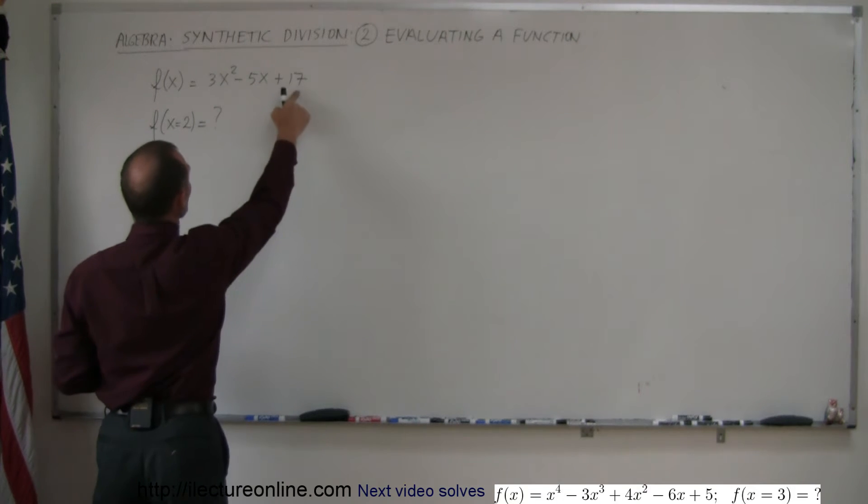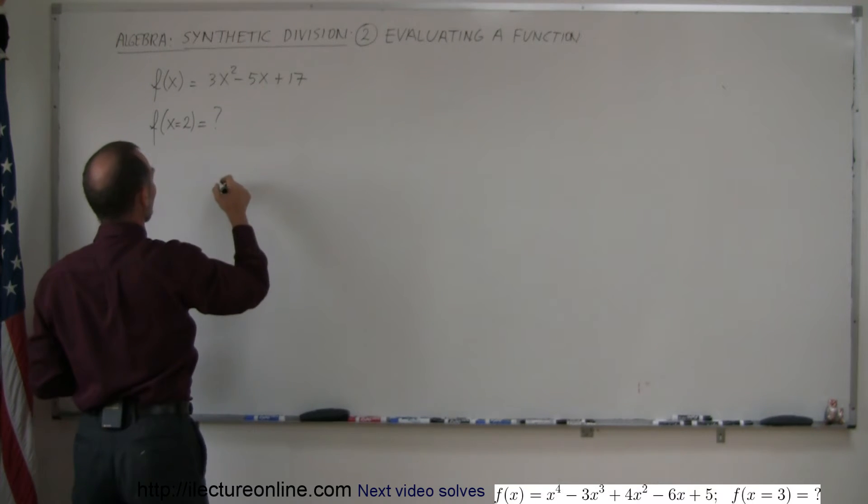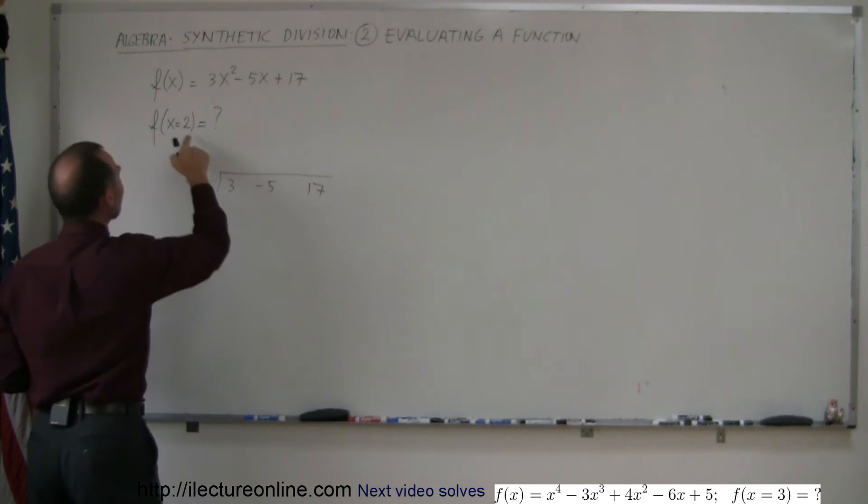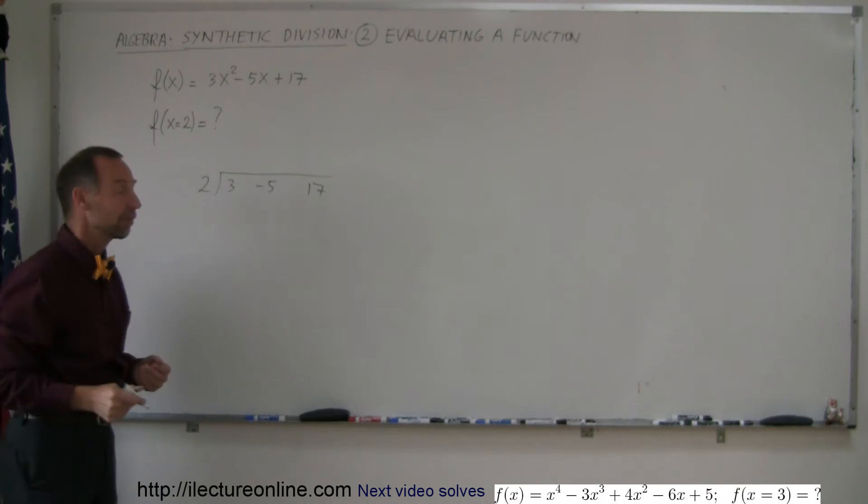Take the coefficients of this polynomial function and write them into your synthetic division notation. That would be 3, -5, and 17. Then take the number 2 and place it right there, and just go through your exercise of synthetic division.